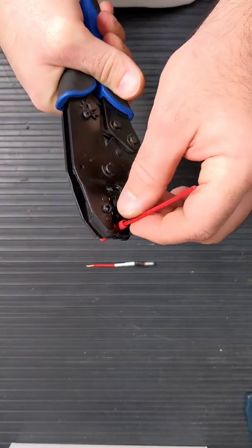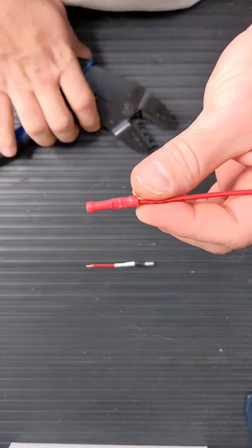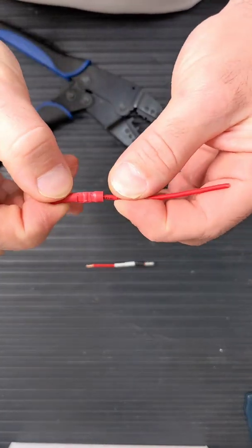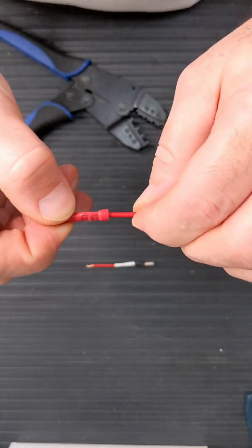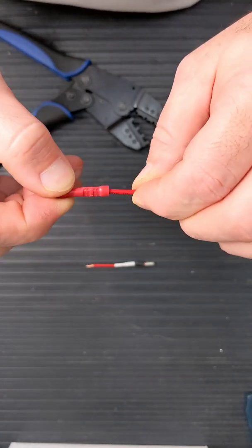You'll feel it in your hand that it is crimping. Put a nice crimp on it. Do a little tug test, make sure it's secure, not wiggling around.